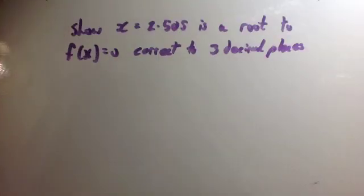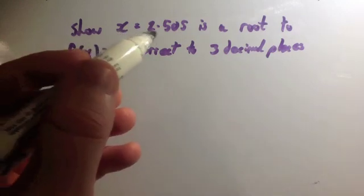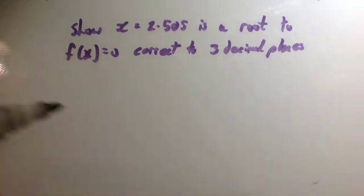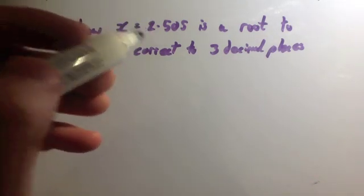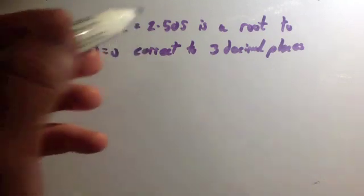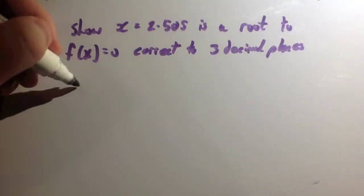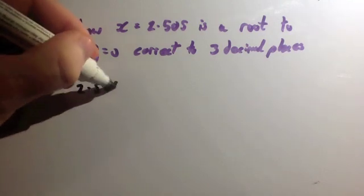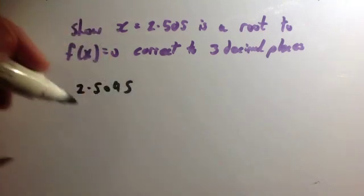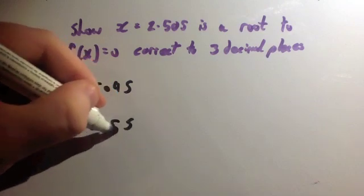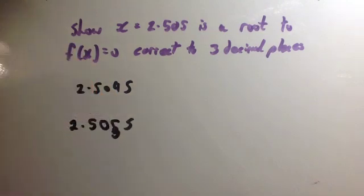And the third most common type of numerical methods question is something like this, where it says show that x equals 2.505 is a root to f of x equals 0, correct to three decimal places. So what you would do is you would figure out what the lower limit and upper limit would be. The lower limit would be 2.5045, upper limit would be 2.5055.